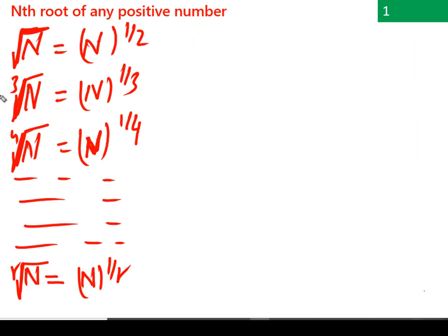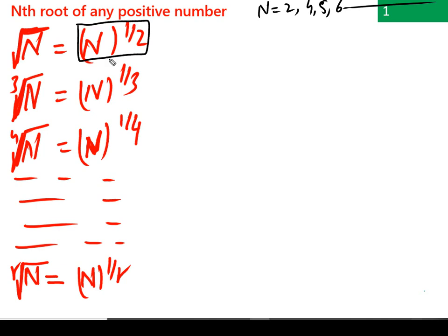Let's say there is a number n — n can be any number: 2, 4, 5, 6, 7, and so on. If we need to find the square root, the cube root, or the fourth root, or even the nth root, we will derive just one single general formula to cover all of these cases.